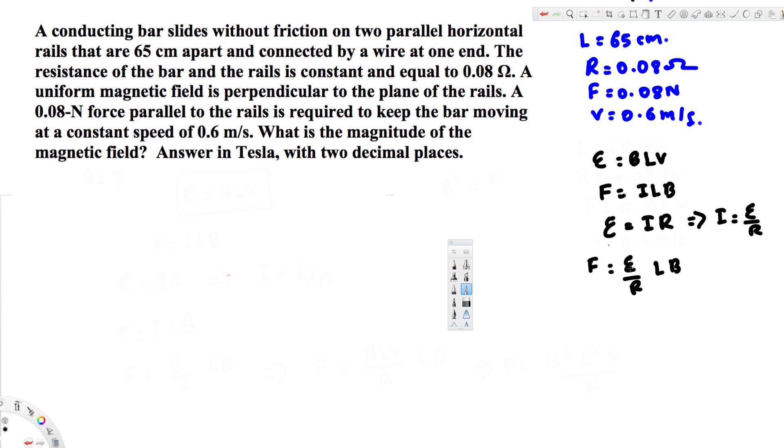If you look at this question, we don't have the EMF also. So instead of EMF, we can plug this one: BLV. This is going to become BLV times LB divided by R. If you simplify this, it becomes B squared L squared V divided by R, which equals F.